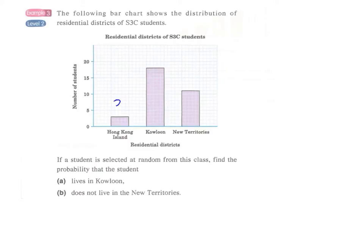We can see that there are 3 students living in Hong Kong Island and 18 students living in Kowloon and 11 students living in the New Territories. If a student is selected at random from this class, find the probability that the student lives in Kowloon.